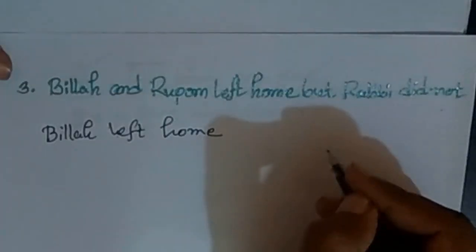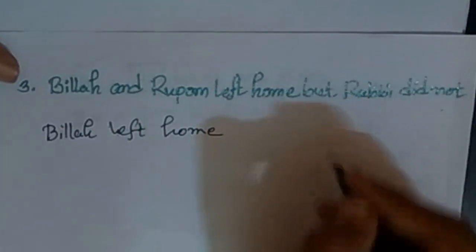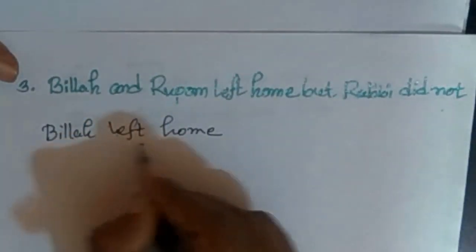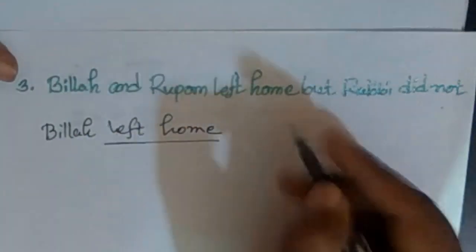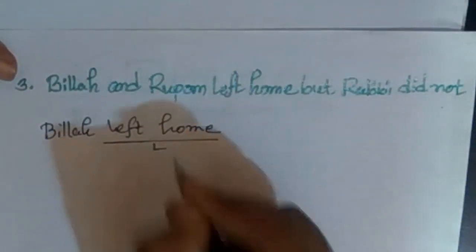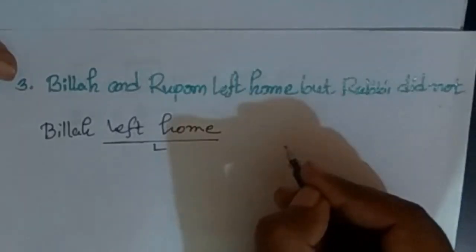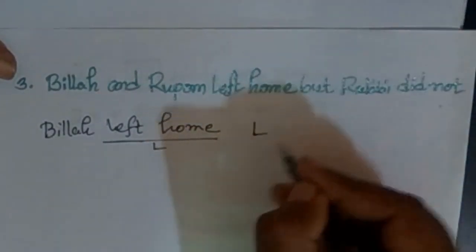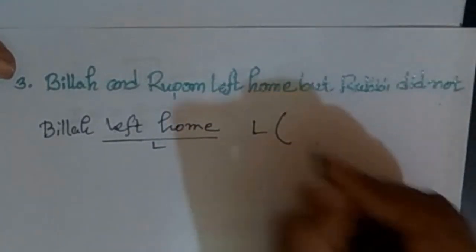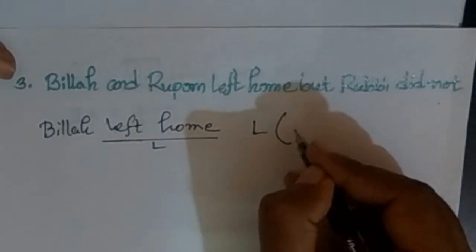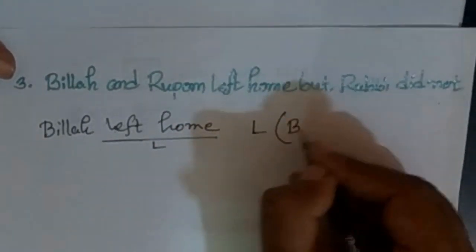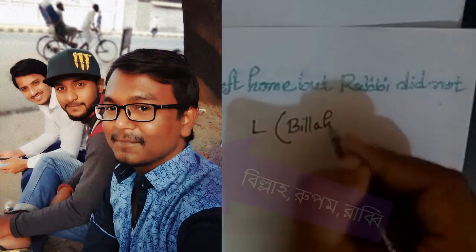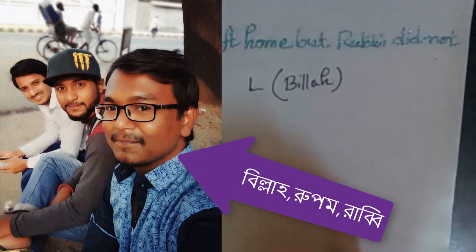Let's take a look at the predicate logic example. Consider 'left home' — the predicate is L. Left home is represented as L-DAR. So here we have L bracket B.